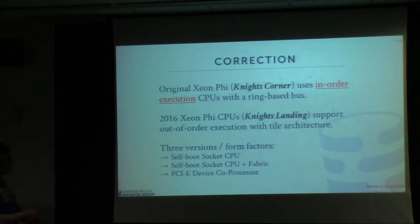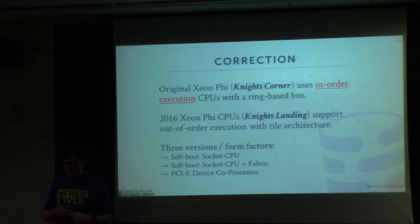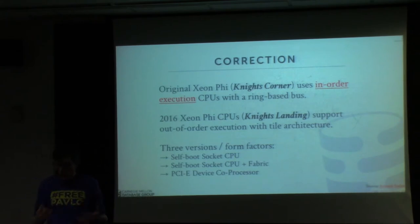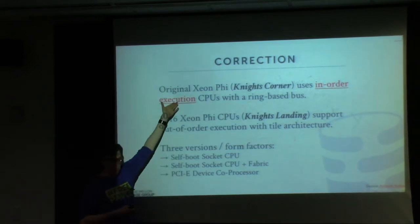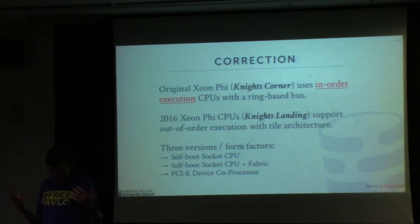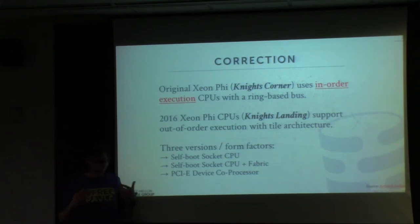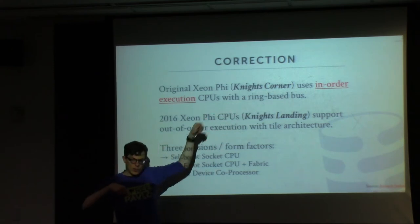First, a correction from last class. In the Columbia paper, when we discussed the Xeon Phi — code name Knight's Corner, prior to June 2016 — we talked about how it used in-order execution CPUs with a ring-based bus. They showed that a branchless sequential scan versus a branching sequential scan showed no real difference, and actually the branchless one performed worse because of the in-order execution CPUs.